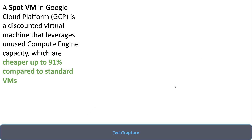Let's first try to understand what is a Spot VM. A Spot VM in Google Cloud is a discounted virtual machine that leverages unused compute capacity, which is cheaper — up to 91% compared to a standard VM. So whenever we are using a Spot VM, the price can be up to 91% cheaper than your standard VM.